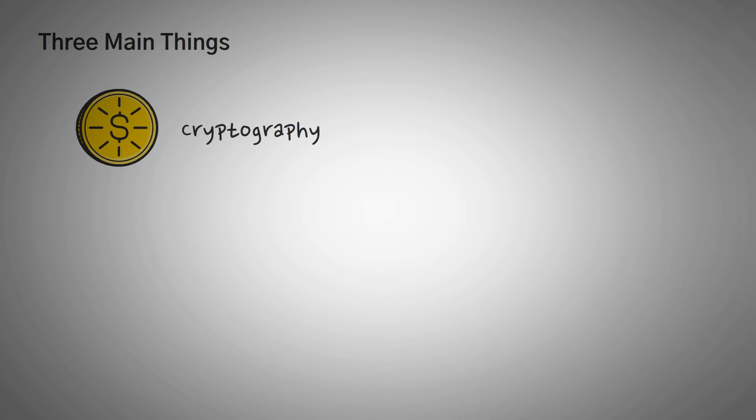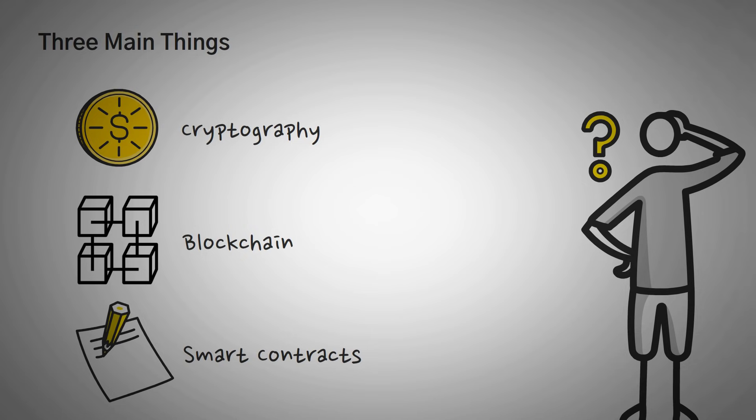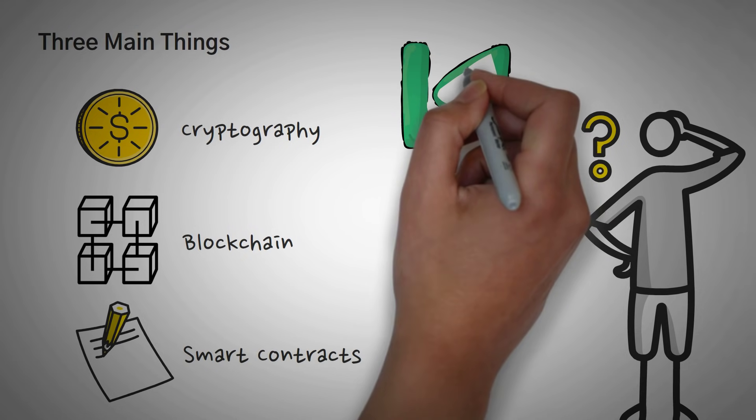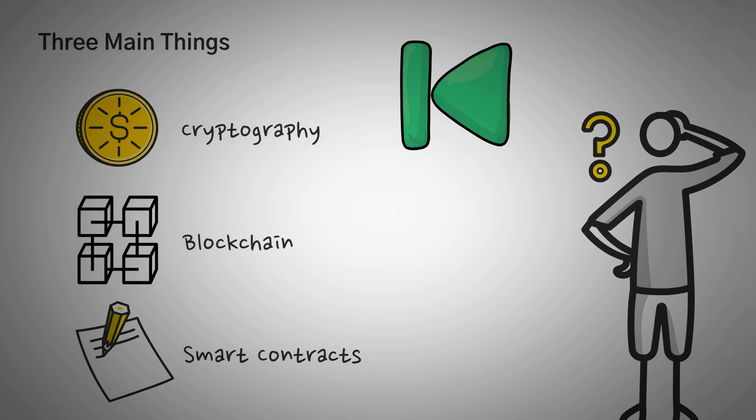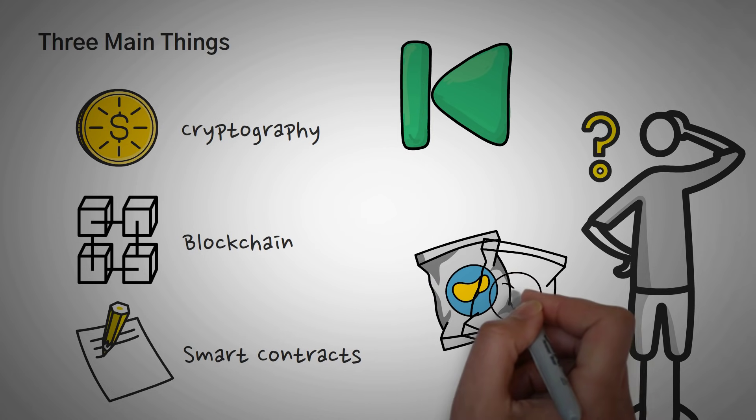Decentralized finance is built on three main things: cryptography, the blockchain technology, and smart contracts. If you don't know what these are, we highly recommend that you check out our other videos on these topics, where we break these topics down so simply, using stories and examples and analogies that even your grandfather could understand them.